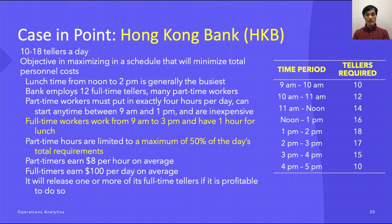Full-timers work from 9 AM to 5 PM but are allowed one hour for lunch. Half of the full-timers eat at 11 AM and the other half at noon. Full-timers thus provide 35 hours per week of productive labor time.